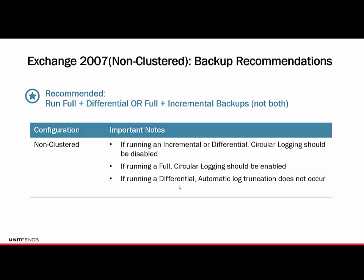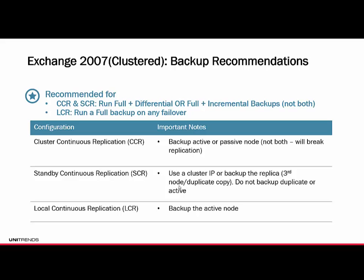For Exchange 2007 in a non-clustered configuration, you can run full and differential or full and incremental backups. Check your agent and Unitrends system releases. For non-clustered, if running incremental or differential, make sure circular logging is disabled. If running a full, circular logging should be enabled. Note that with a differential backup, automatic log truncation does not occur — only on fulls. For Exchange 2007 clustered, if running continuous replication — CCR and standby continuous SCR — you can run full and differential or full and incremental, but not both. If running local continuous replication, back up the active node and run a full only on any failover.